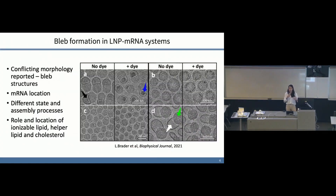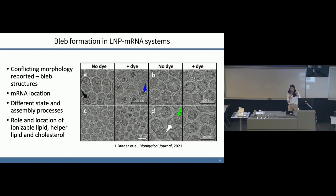However, there are conflicting morphologies and structures reported in the literature when it comes to mRNA. We have to remember that not all cargoes are the same — mRNA is much larger than siRNA. Some reported morphologies show LNPs forming an oil core structure similar to what we see with siRNA, but sometimes we also see structures with protruding pockets where there is electron density. Some literature has reported that by staining these pockets, this is where the mRNA is located. Yet there are still many questions about how these morphologies are formed.